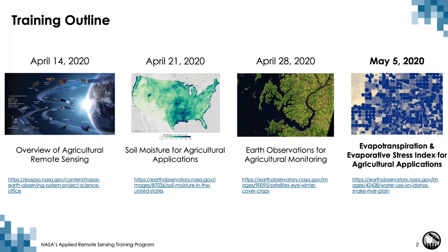In part one of the webinar series, we provided an overview of satellite remote sensing for agriculture, highlighting specific satellites and sensors and how to access these data products. In part two, we focused on soil moisture using NASA satellite observations and modeled products that provide critical information for drought monitoring, agricultural monitoring, and crop forecasting. In part three, we covered main products and variables for cropland and rangeland monitoring and showcased operational agricultural monitoring and early warning systems.